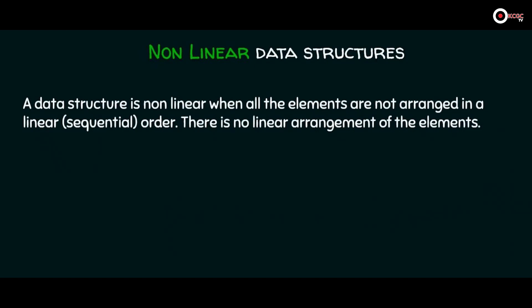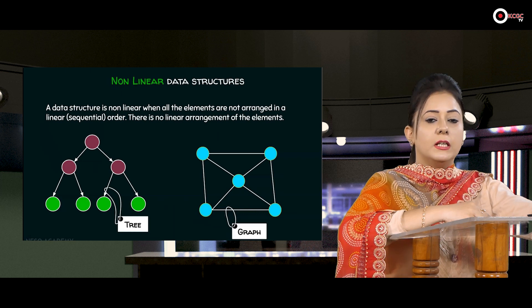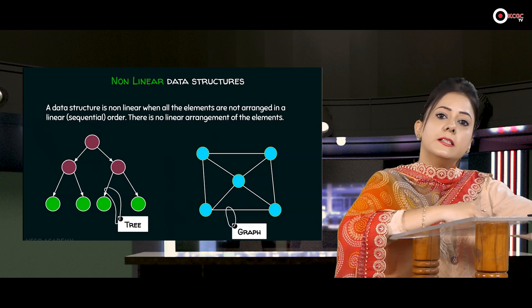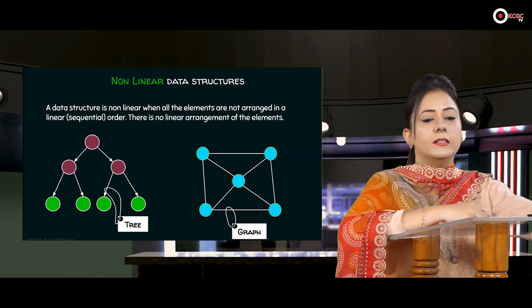How can you recognize whether a data structure is linear or not? If each element of a data structure has one predecessor and one successor — with exceptions for the first and last element — then that data structure is linear. Nonlinear data structures are those which don't have any sequential form of data. Examples are trees and graphs. In a tree, each node doesn't satisfy both conditions of one predecessor and one successor, so it is a nonlinear data structure.